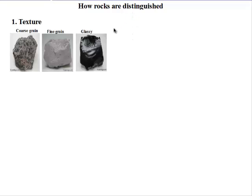We also looked at how rocks are distinguished. We said rocks are distinguished based on their texture, and with texture they are either coarse-grained, which is rough, or fine-grained, which is smooth, or they are glassy.